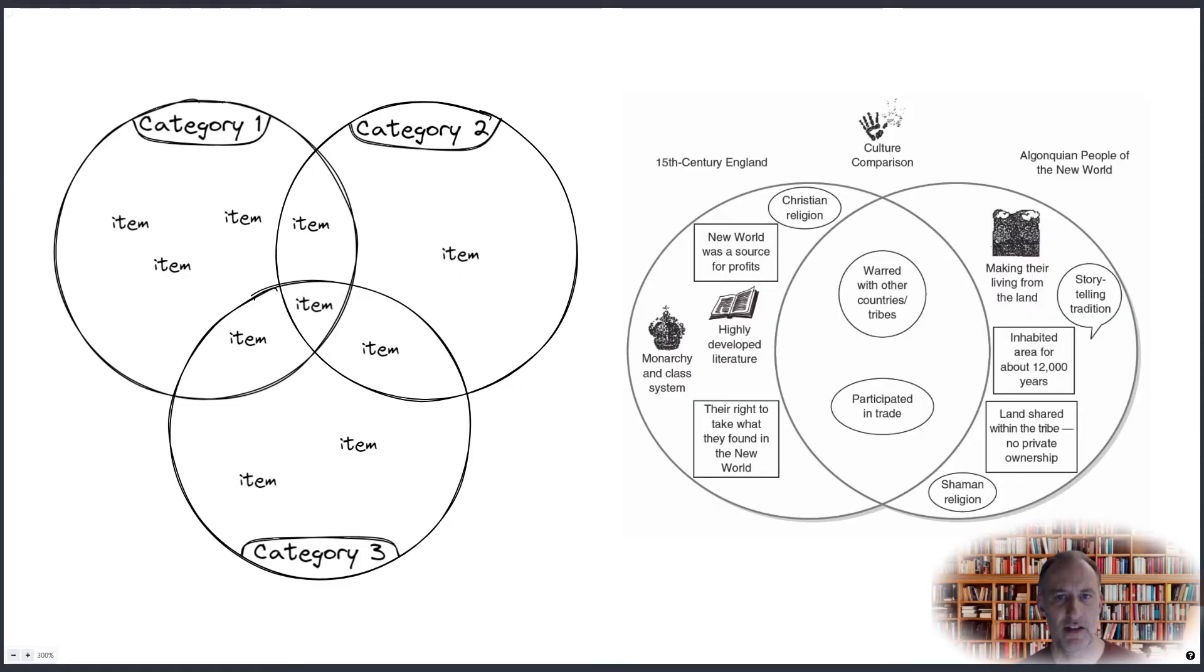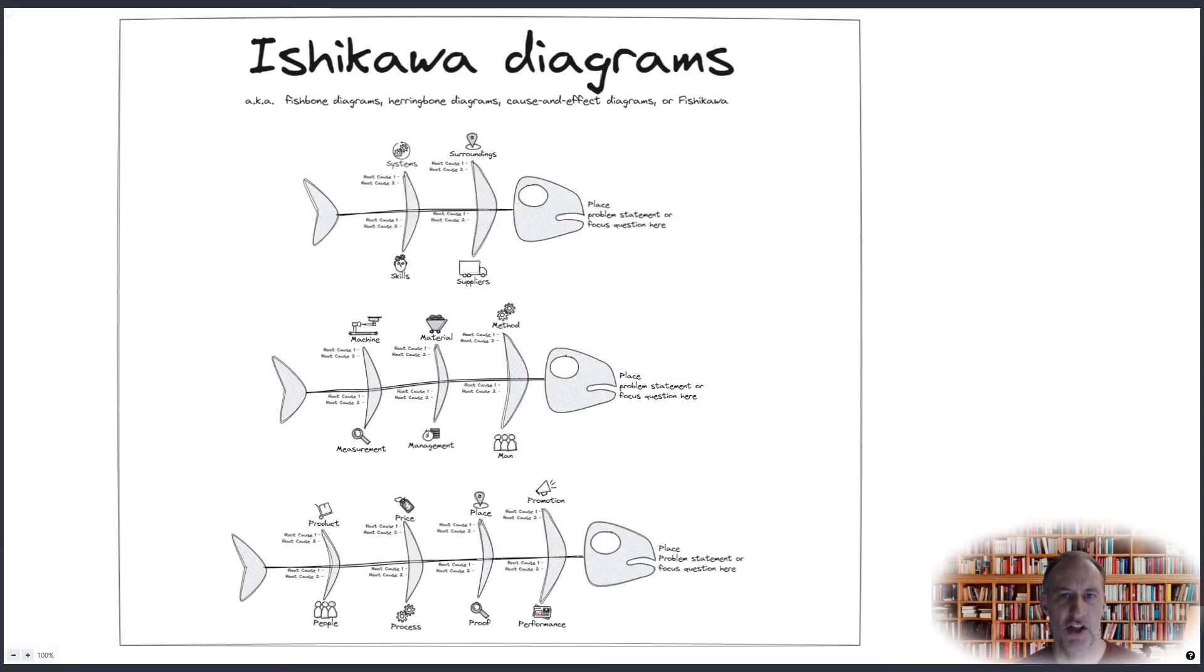Beyond categorization, Venn diagrams are also often used for comparing objects or concepts. The fishbone or Ishikawa diagram is another example of a process specific graphic organizer. These diagrams facilitate cause and effect analysis. Follow these eight steps to complete a cause and effect analysis as a team.